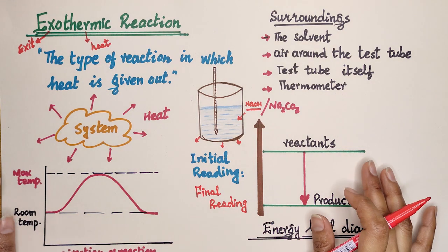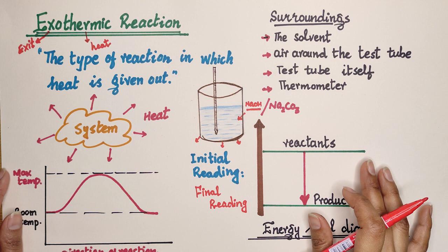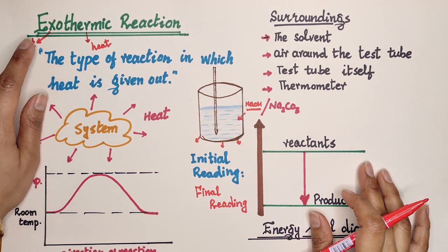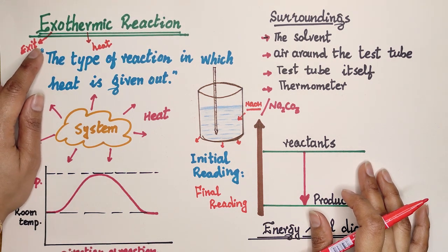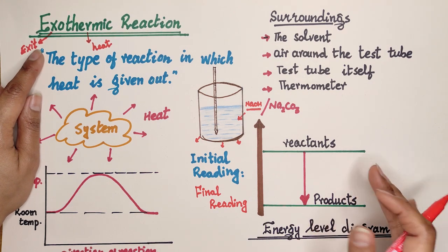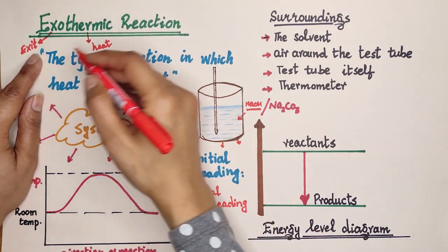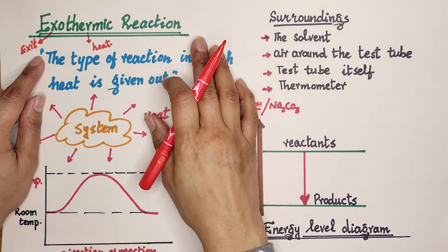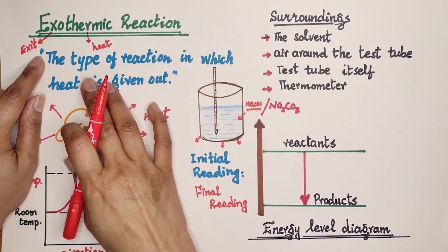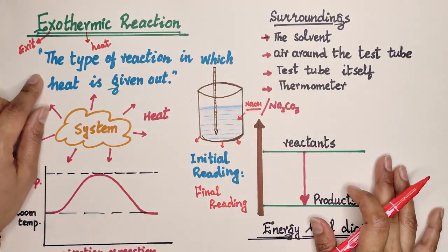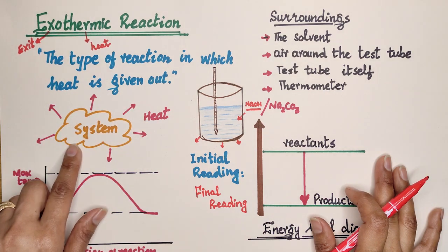Today we are going to learn about the chapter 'Energy from Chemicals.' First, we will cover exothermic reactions. 'Exo' means exit and 'therm' means heat, so an exothermic reaction is basically the type of reaction in which heat is given out.